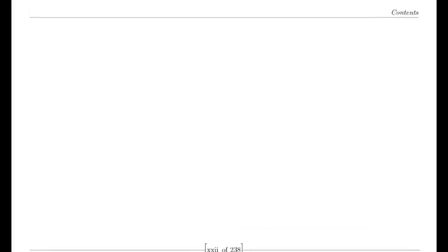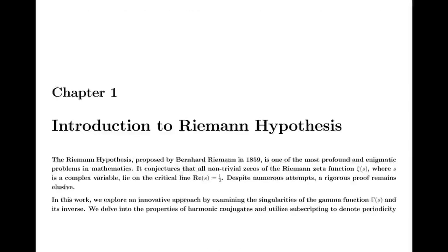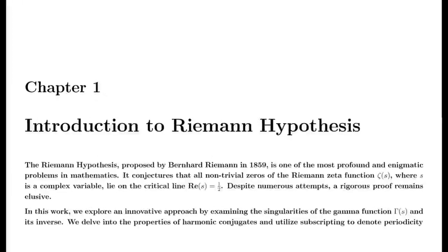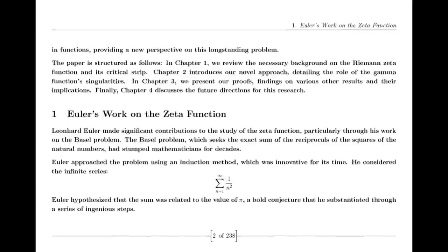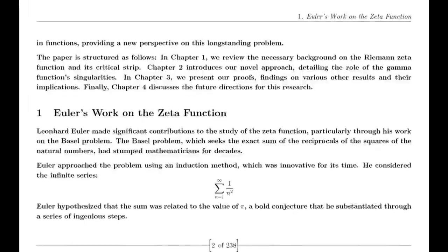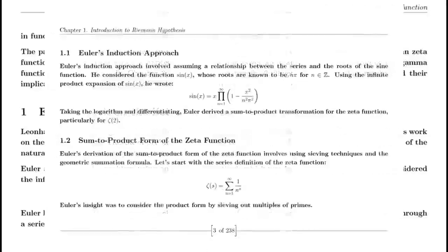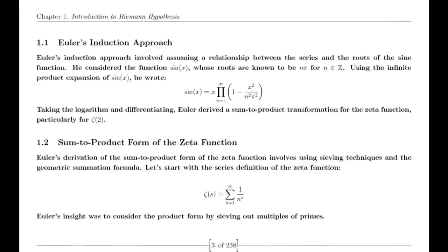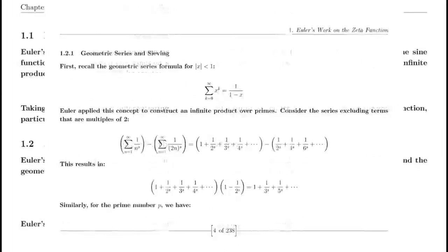One of Riemann's major discoveries was the reflection formula for the zeta function. This formula demonstrates a symmetry between the values of the zeta function at s and 1 minus s. Specifically, it shows that ζ(1−s) can be expressed in terms of ζ(s) using factors involving π, the gamma function, and trigonometric functions. This reflection formula is fundamental to the theory of the zeta function and provides deep insights into its structure.